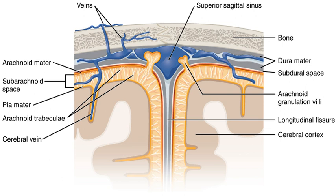The tentorium cerebelli, the second largest, is crescent-shaped and separates the occipital lobes from the cerebellum. The falx cerebri attaches to it, giving a tent-like appearance. The falx cerebelli is a vertical infolding that lies inferior to the tentorium cerebelli, separating the cerebellar hemispheres. The diaphragma sellae is the smallest infolding and covers the pituitary gland and sella turcica.